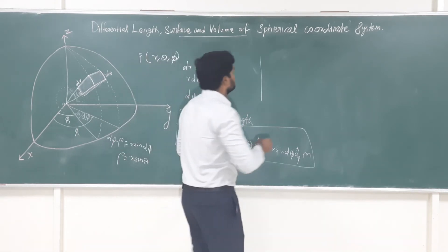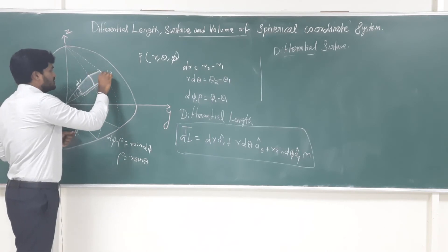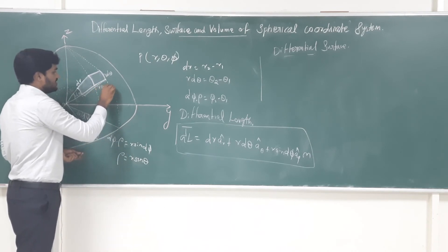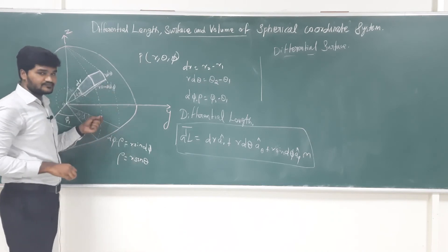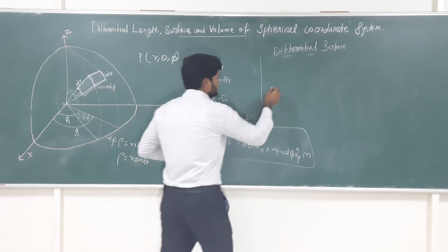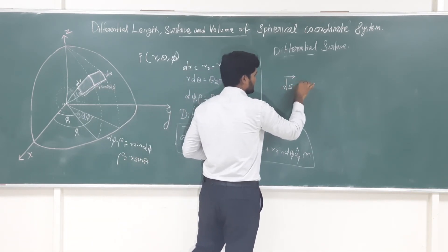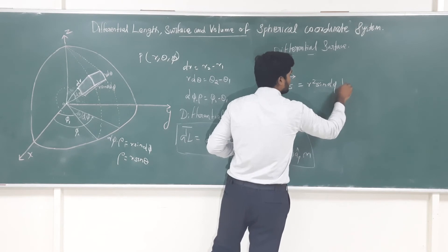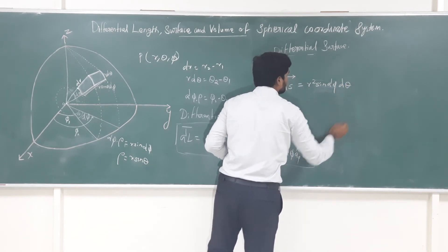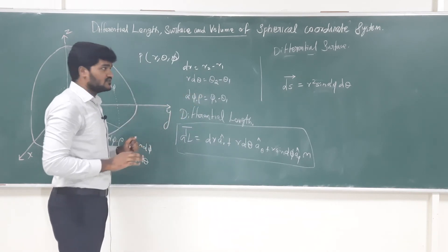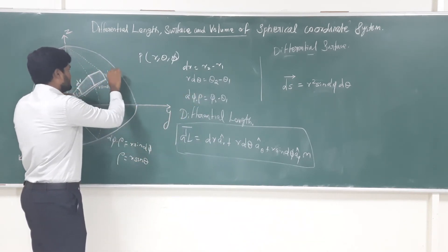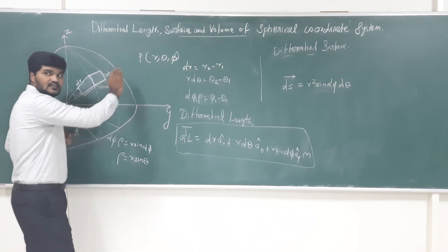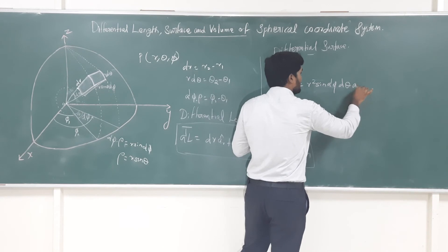Next is the differential surface. Consider the upper portion: this side is r·dθ and this side is r·sinθ·dφ. The surface of the upper portion is dS = r²·sinθ·dθ·dφ. The direction of this portion is the outward direction, represented by ar̂, because in this direction the r value increases.